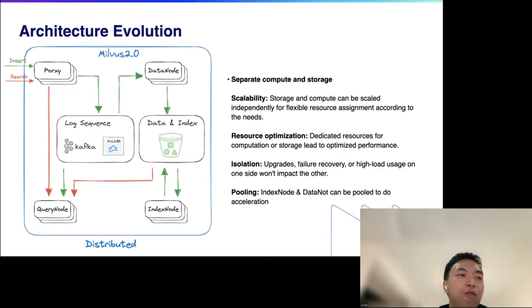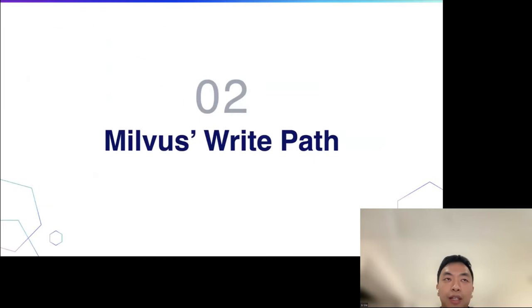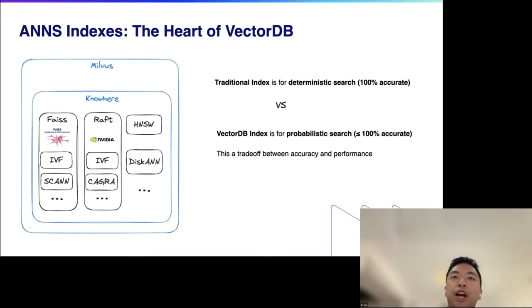This is a high-level overview of Milvus architecture and its main pathways. In the next session I'd like to dive into the write pathway to show more details about Milvus. When it comes to the design detail of the vector database, the vector search algorithm is an unavoidable topic because many design decisions are made regarding the attributes of algorithms. In Milvus, they consume over 80% of the CPU usage.